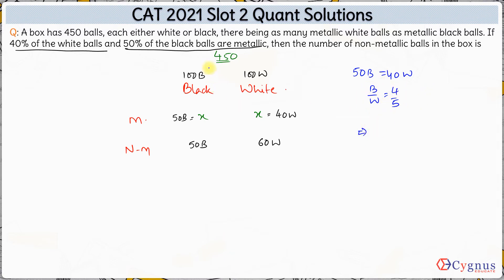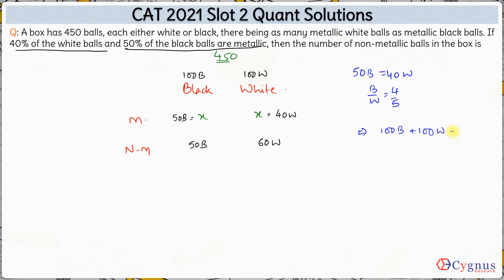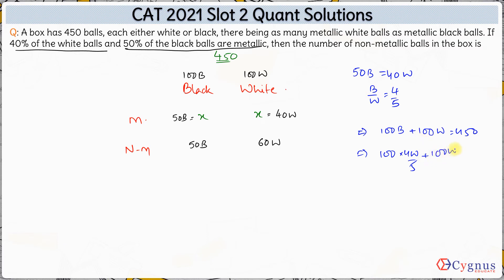The total number of balls is 100B + 100W = 450. From the ratio B/W = 4/5, we can write B = 4W/5. Substituting, we get 100 × (4W/5) + 100W = 450.